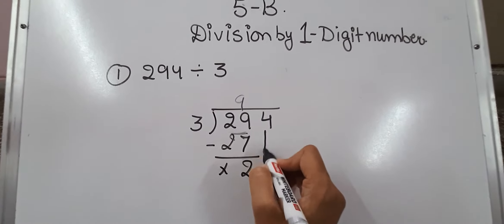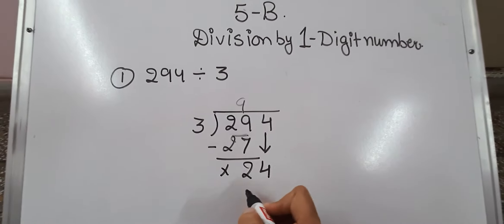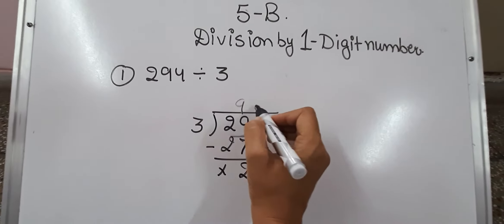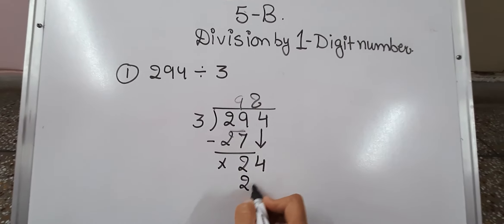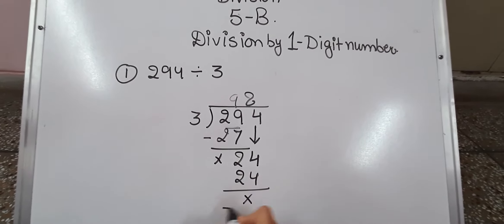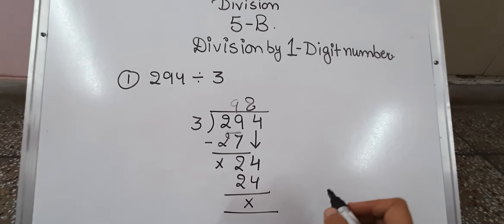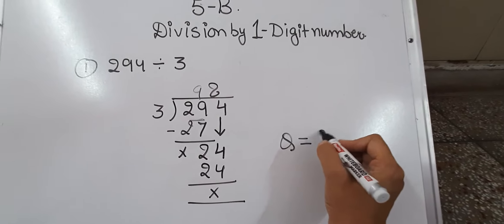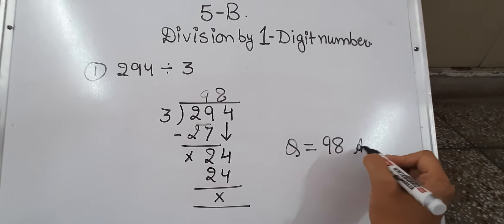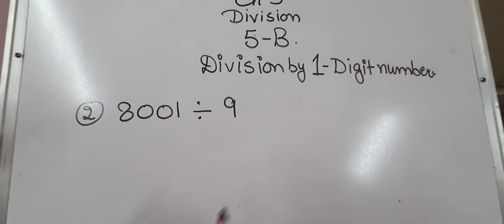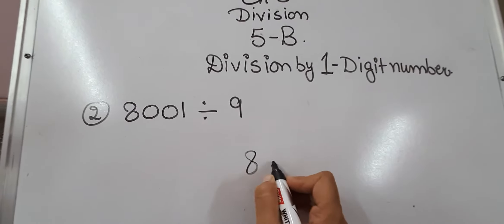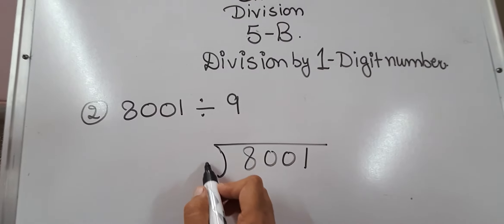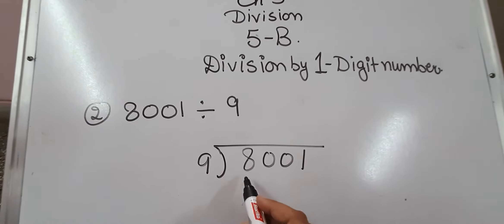2 will be here, it will be 0. We will put 4 down. Now 3 eights are 24. This will be 0, or we can put a cross here. So the answer — the quotient — is 98.